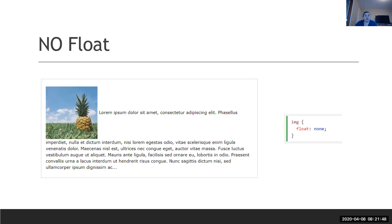In the HTML the image tag comes first and then the text. If you place the image tag after the text, the image would appear below the paragraph. With no float, the text isn't allowed to wrap around the image — it can only go across the screen, and when it hits the edge it has to drop down below the picture.